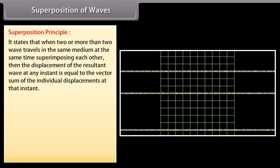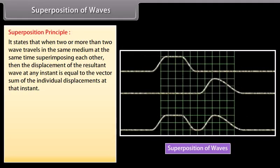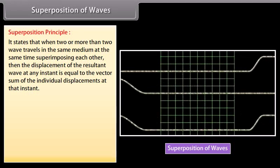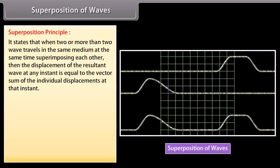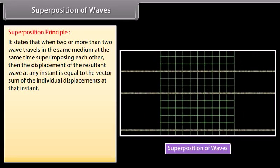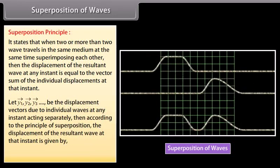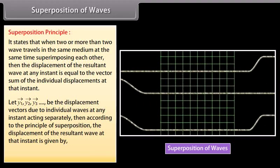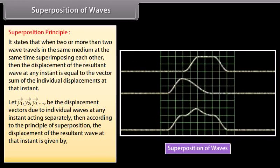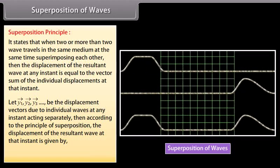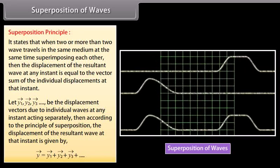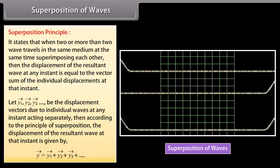Principle of superposition states that when two or more waves travel in the same medium at the same time and superimpose, the displacement of the resultant wave at any instant is equal to the vector sum of the individual displacements at that instant. If y1, y2, y3, ... are displacement vectors due to individual waves, then the resultant displacement is given by y1 + y2 + y3 + ...